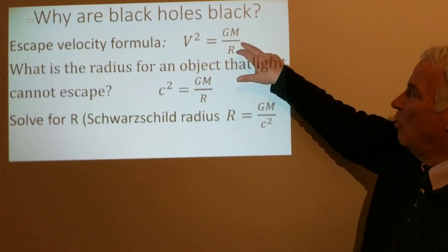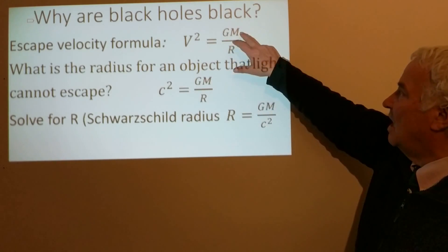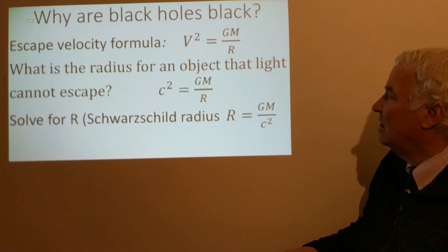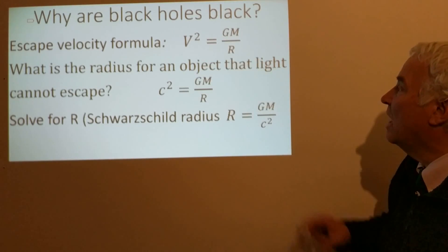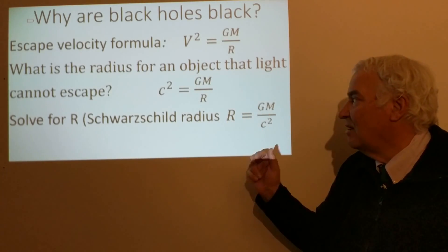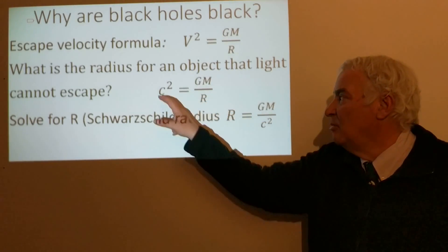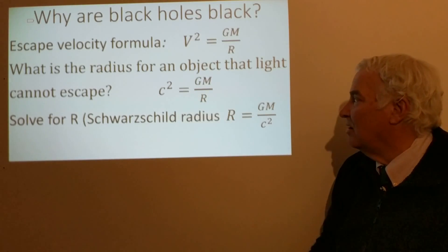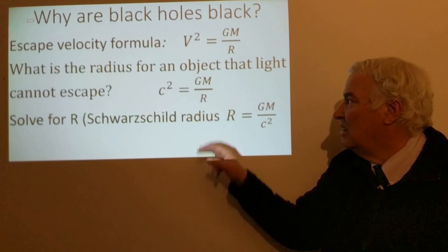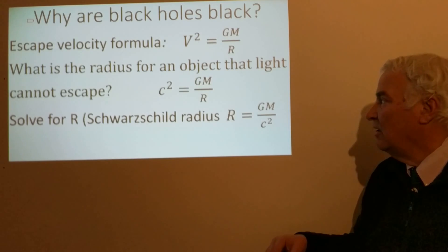If we think about what makes an object difficult to escape from, we want an object that has a high mass but a small radius. Because if we divide by a small radius, we get a large velocity. The way we could do that is to think about what is the radius for an object that light cannot escape. We would put in c, which is the symbol for the speed of light, and c² here instead of v². So the speed of light squared equals GM/R for some kind of object that would have an escape velocity equal to the speed of light.